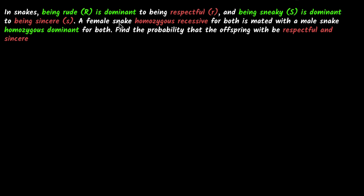Let's write that down. What does it mean to say the female snake is homozygous recessive? Homozygous means both alleles are the same. So for both genes, it has the same alleles, and it's recessive — so both will be small r and both will be small s. Similarly, for the male, it is homozygous dominant, so both will be capital R and both will be capital S. Homozygous means same.